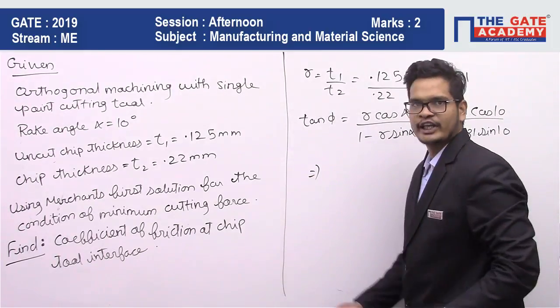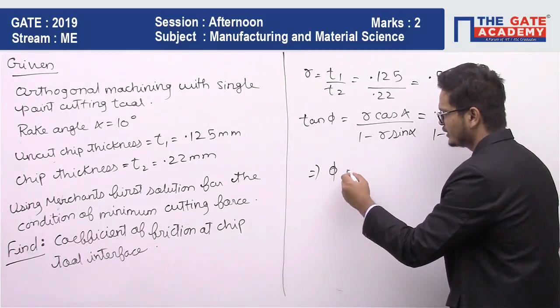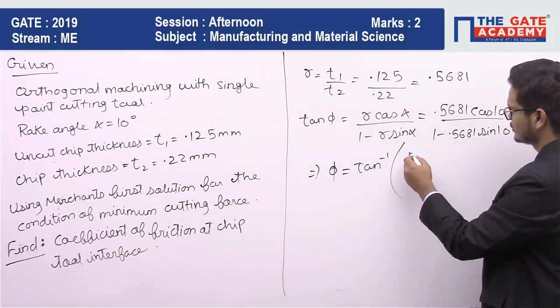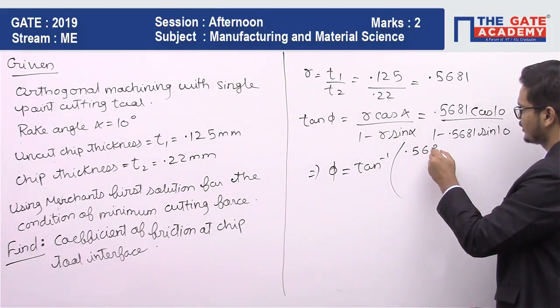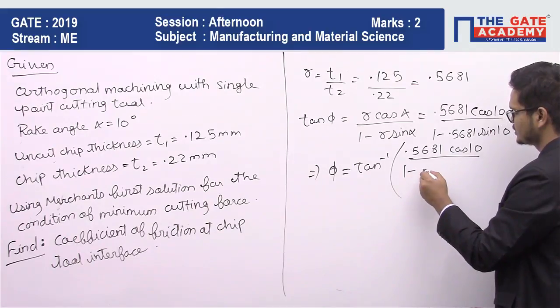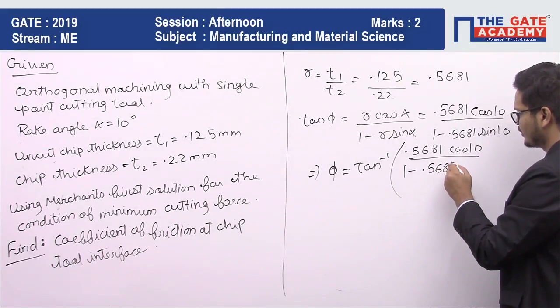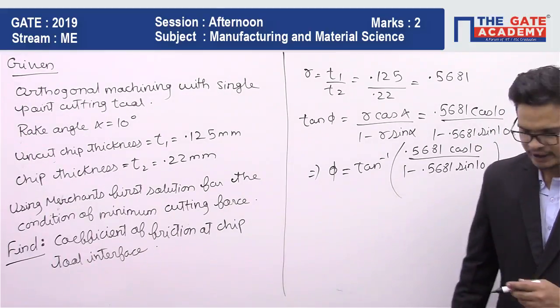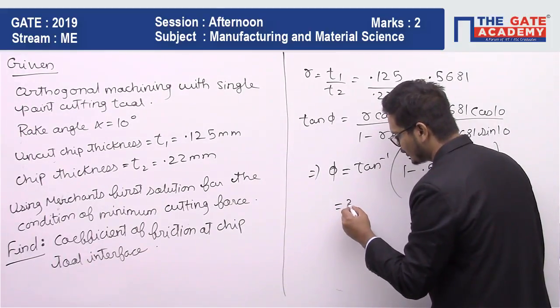From here we will take the inverse. So the value of phi comes out to be tan inverse of 0.5681 cos of 10 upon 1 minus 0.5681 sin of 10. So the value of shear angle comes out to be 31.82 degrees.